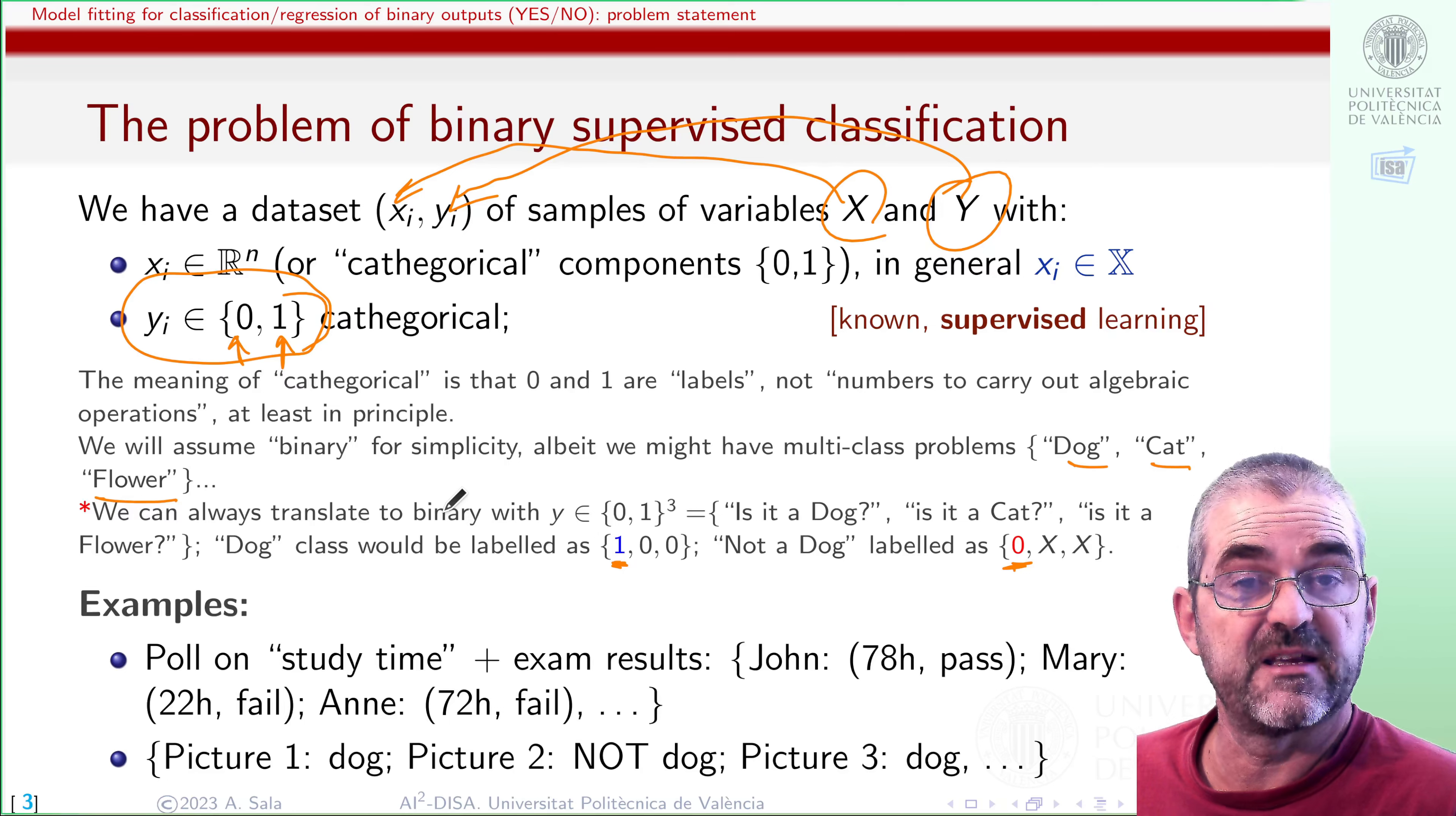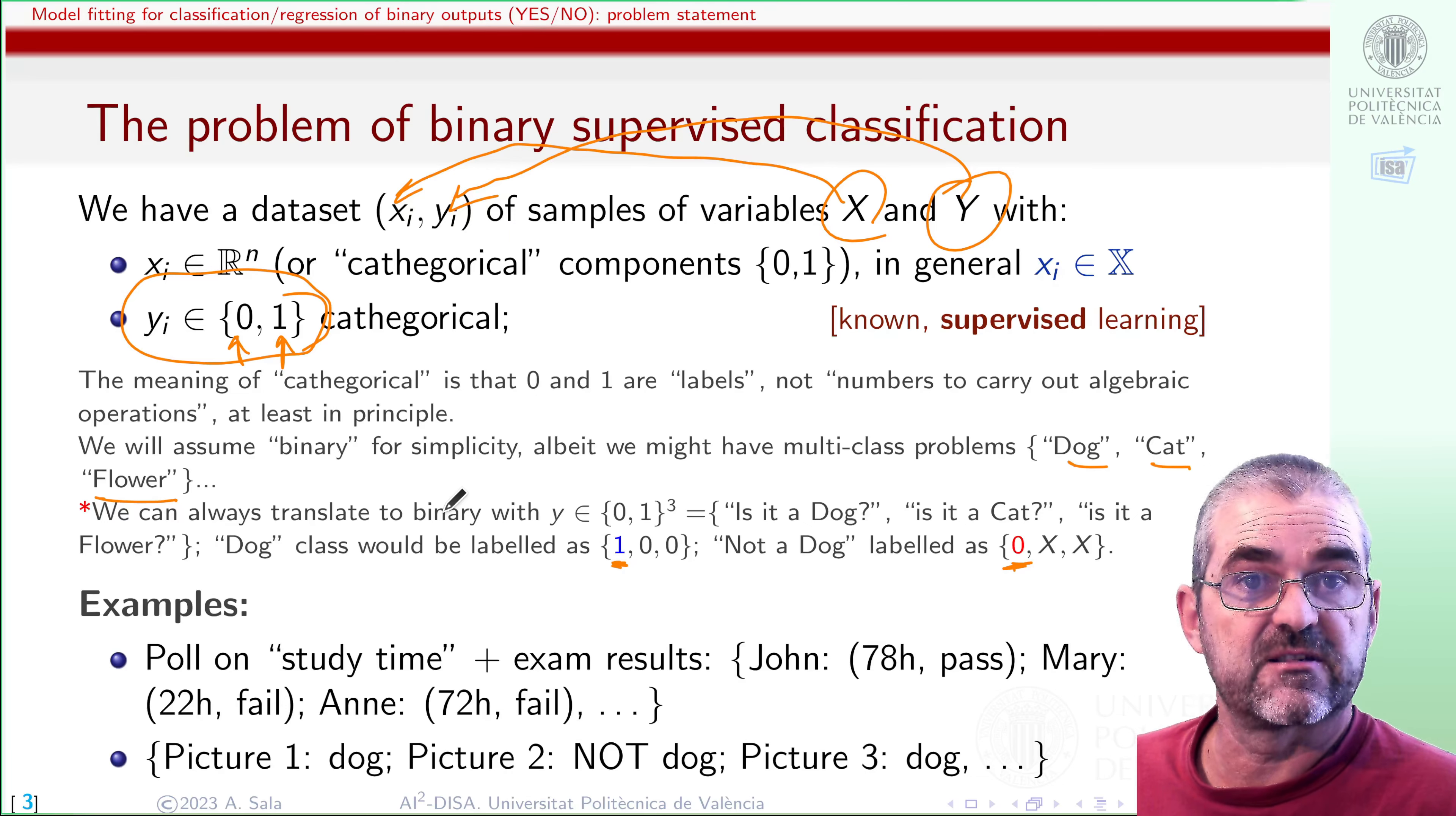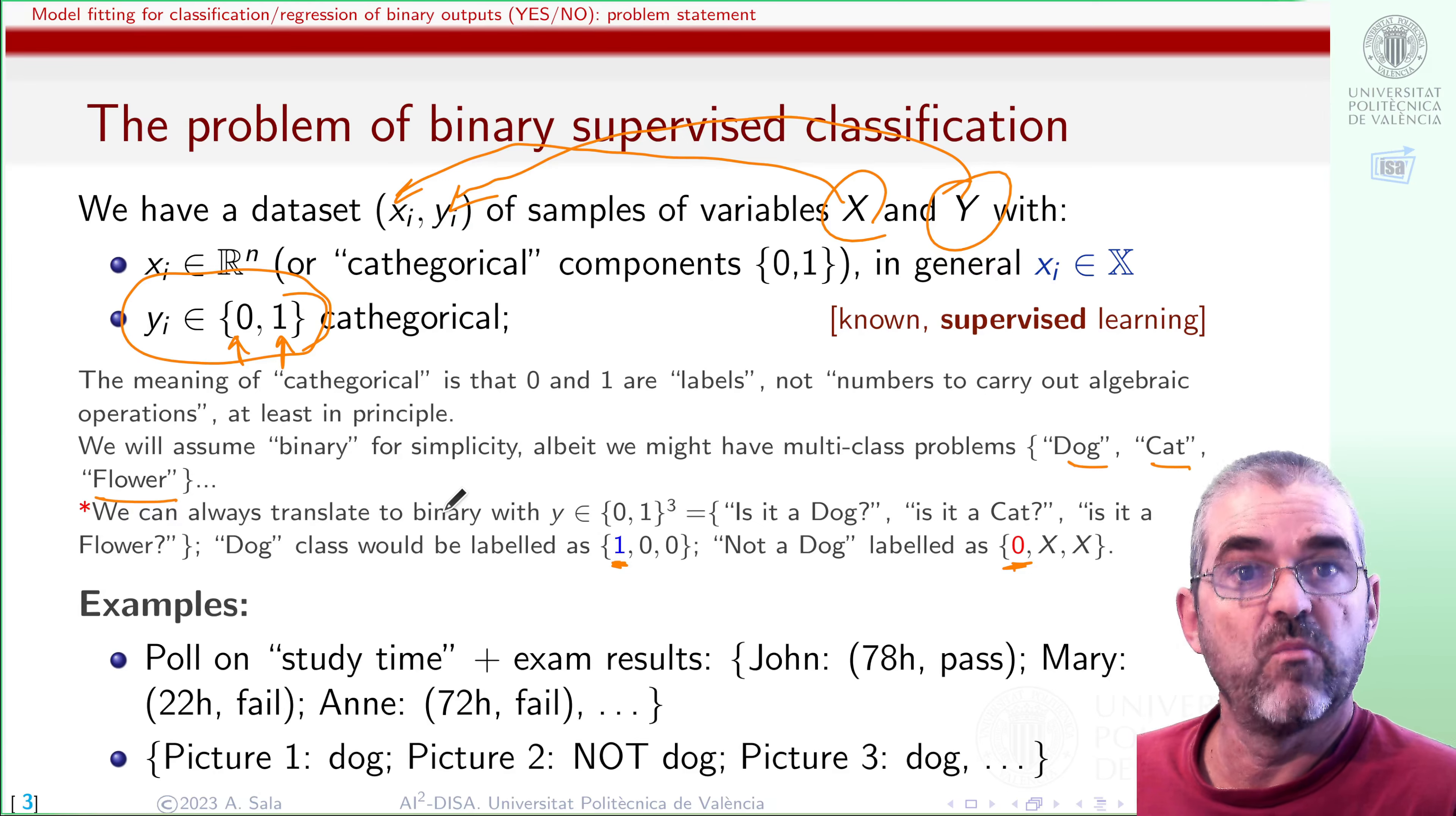So, as I said, these problems could be deciding whether an email is spam or not, given some words in it, deciding whether a student will pass or not, given the time he devoted to it, or deciding if a picture is a dog or not, given the pixel color on it. But some of these problems may have a random statistical component in the exam results. John may pass studying 78 hours, but Juliet may fail studying 79 hours. So, there's kind of uncertainty, because there are more things to the examination than study time.